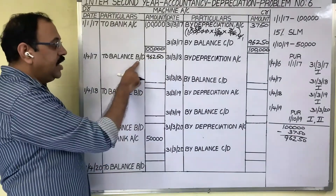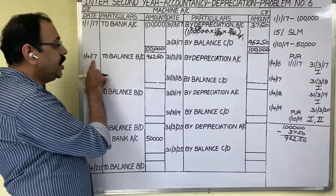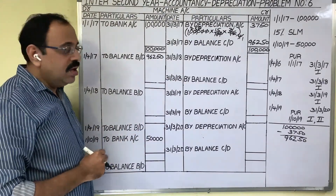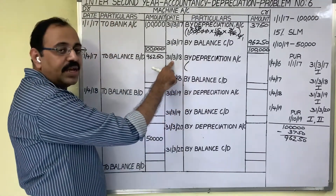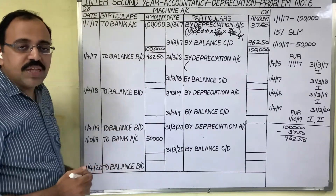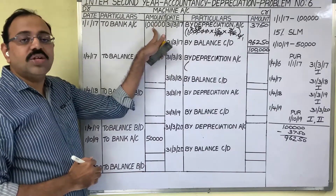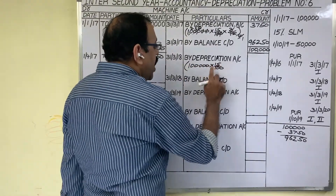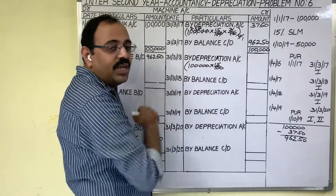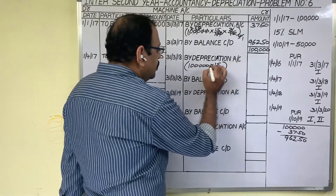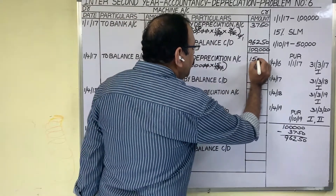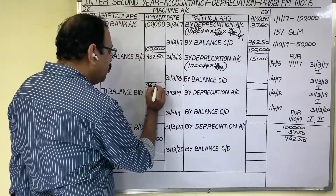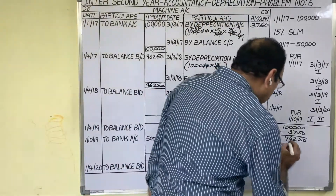In the 2nd year, they use this asset from 1st April 2017 to 31st March 2018 — a full year. We must provide depreciation at the end of the 2nd year. Under the straight line method, every year we provide depreciation on the original cost of the asset. Original cost is 1 lakh at 15%, and since it is a full year we do not need to adjust for months. Second year depreciation is ₹15,000. Balance carried down: 96,250 − 15,000 = ₹81,250.